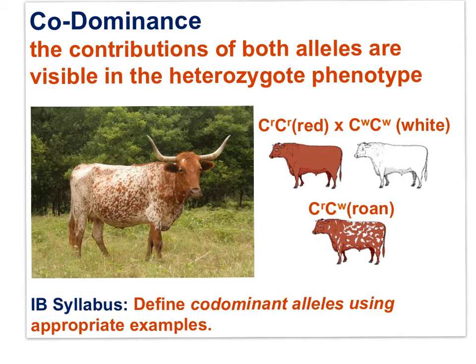Once again, one gene for coat color, two alleles — CR and CW — but three phenotypes: red, white, and roan.